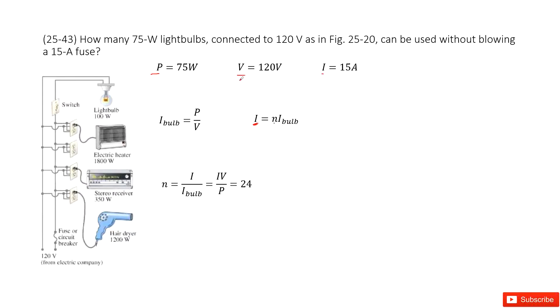And then we look at the given quantity. The given quantity is the power for the light bulb and the voltage for the light bulb. So very straightforward, you can get the current for the light bulb as the power divided by voltage.